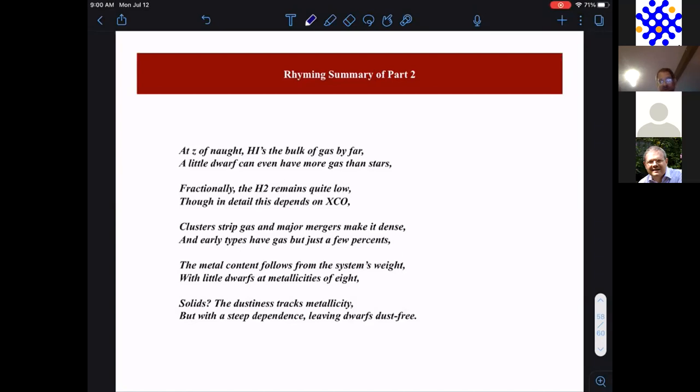Clusters strip gas, and major mergers make it dense. And early types have gas, but just a few percents. The metal content follows from the system's weight, with little dwarfs at metallicities of eight. Solids? The dustiness tracks metallicity, but with a steep dependence, leaving dwarfs dust free.